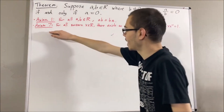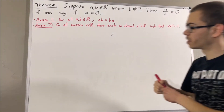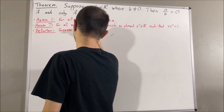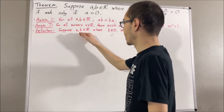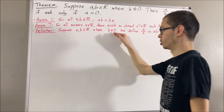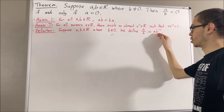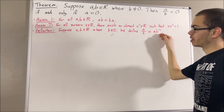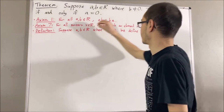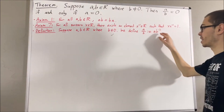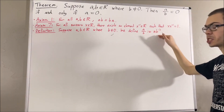Now, using axiom 7, our definition of division is as follows. Suppose a and b are real numbers, where b is not equal to 0. We define a over b to be a times the reciprocal of b. Now notice, since b is not equal to 0, according to axiom 7, the reciprocal of b makes sense to talk about. So this definition makes sense.